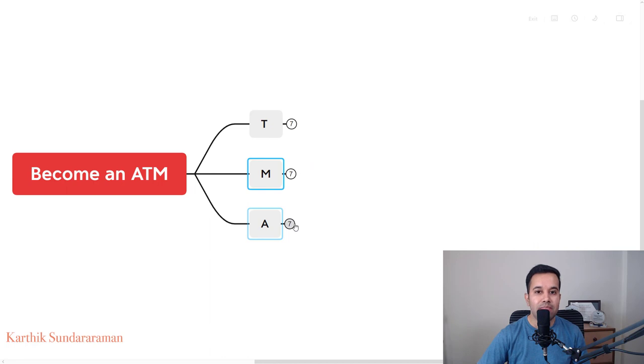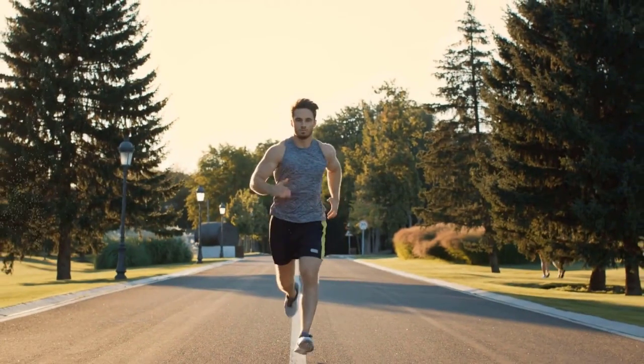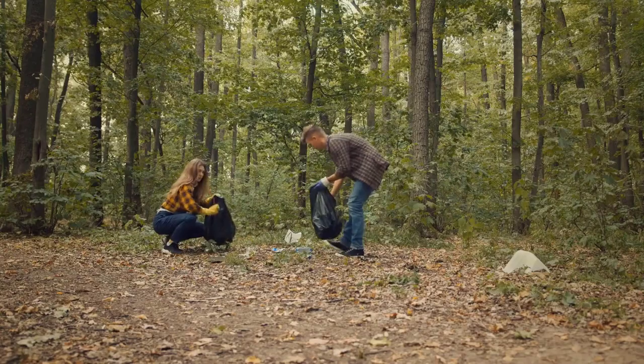And the A in the ATM, I'm pretty sure you have already figured this out, is A is for action. The first one under this is, are you willing to put in the daily effort in spite of you not finding or having that immediate result? Are you able to do that by staying accountable and by staying motivated?